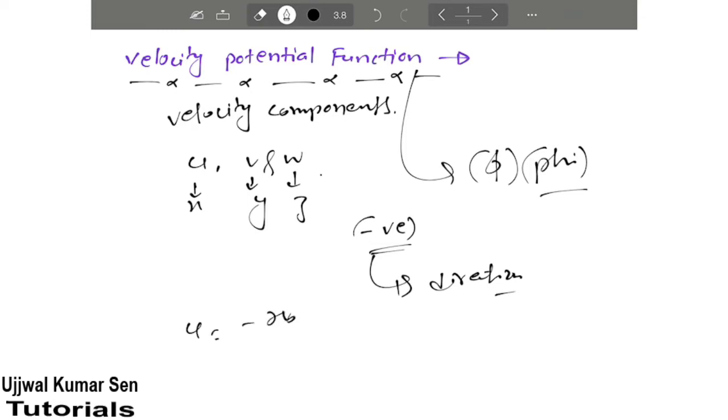This negative sign is representing its direction. u equals minus curly phi upon curly x, v equals minus curly phi upon curly y, and w equals minus curly phi upon curly z. This minus sign represents direction.